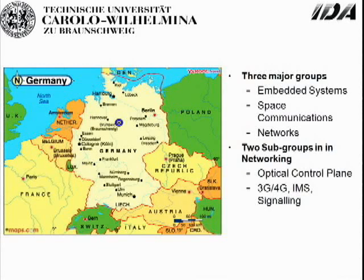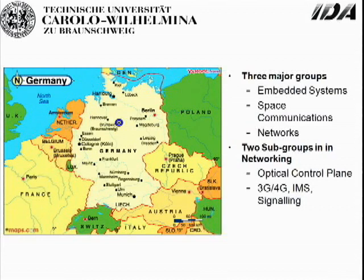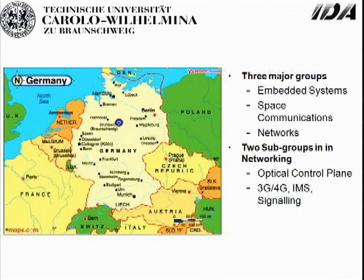The Institute of Data Communications and Networking is composed of three major groups: the embedded systems group, the space communications group, and the networking group. The networking group where I work is composed of two subgroups — one focused on optical control plane and optical telecommunications research, and another concerned with 3G, 4G, and mobility issues, design and architectures.